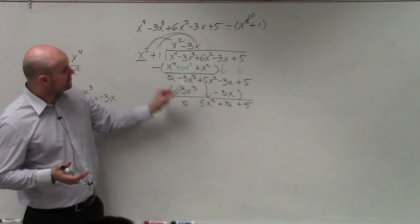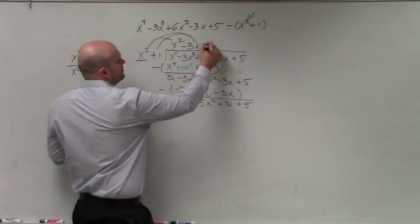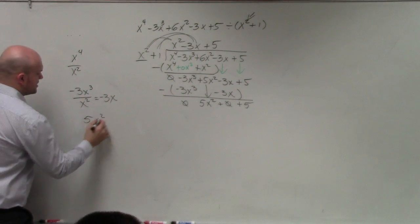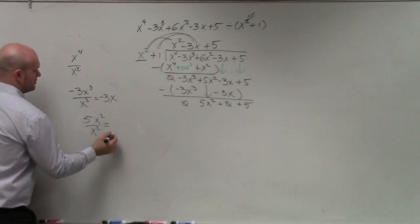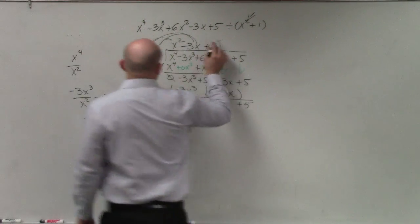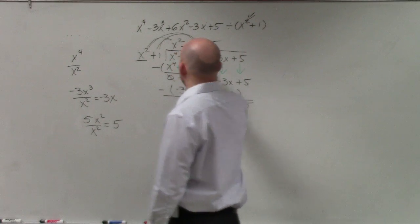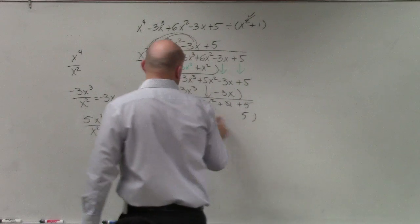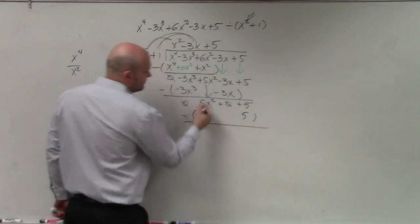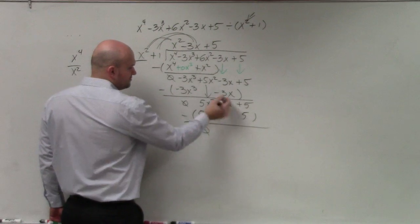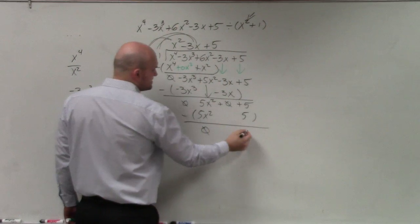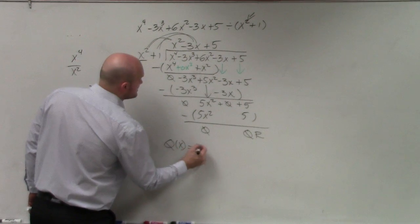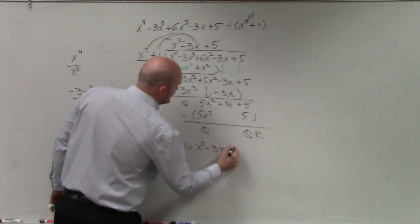Then we do it again. x squared divides into 5x squared, positive 5 times. And then we do 5 times x squared, which is 5x squared. And 5 times 1, which is positive 5. Subtract the rows. 5x squared minus 5x squared is 0. 0 brings down. 5 minus 5 is 0. So your quotient is x squared minus 3x plus 5.